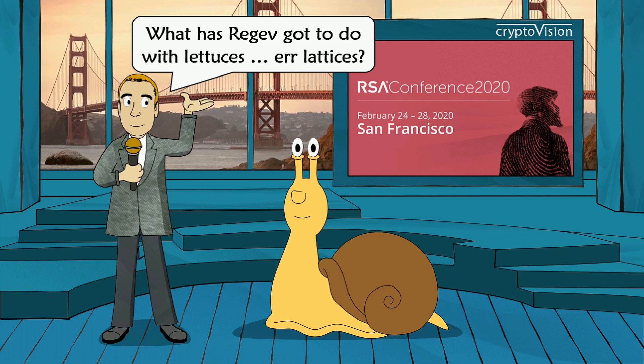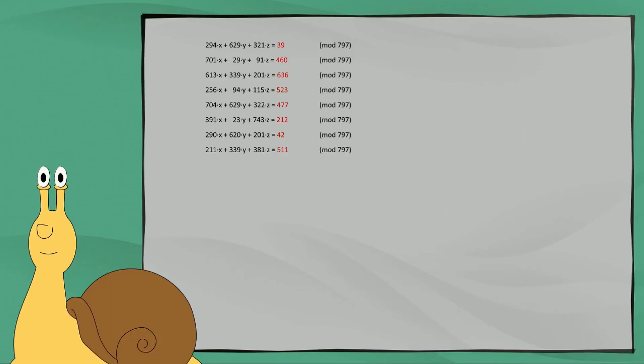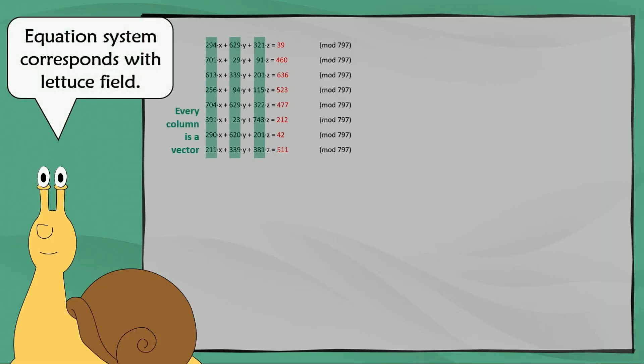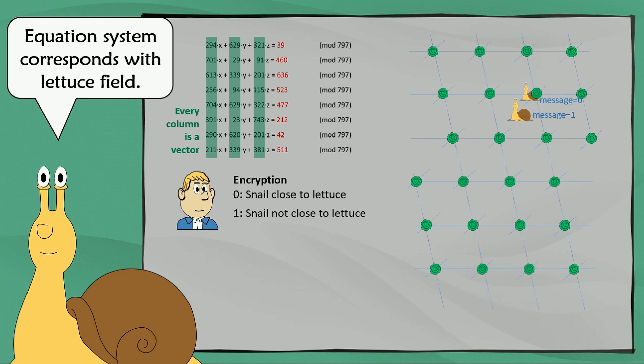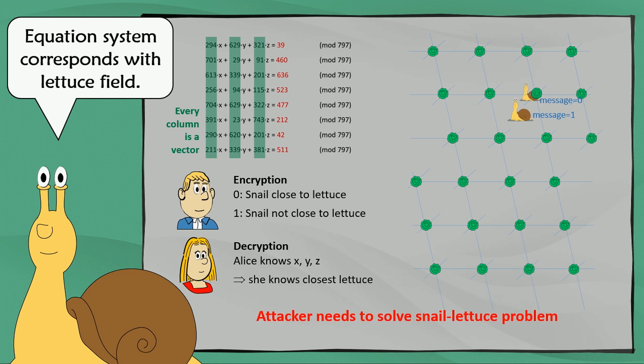What does Regev have to do with lattices? Each column in this equation system can be interpreted as a vector, so this is equivalent to a three-dimensional vector field — and in practice, we don't have three dimensions, but 250 or something like that. Encryption means putting a snail close to a lattice for a zero, and looking for a maximum distance from the next lattice for a one. Alice can easily decrypt this with her private key, and an attacker needs to solve the snail lattice problem, which is difficult. In the NIST competition, 12 lattice-based systems are still in the race, with names like NTRU, New Hope, Three Bears, and FrodoKEM.